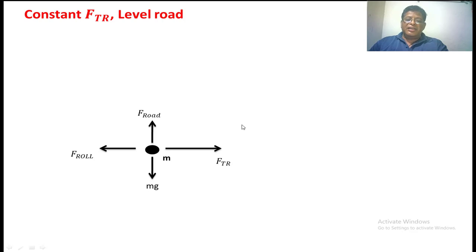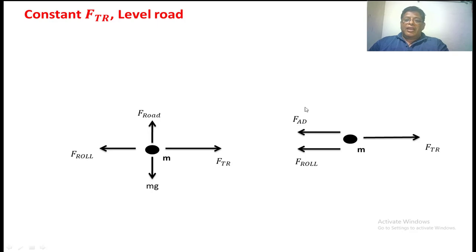In the initial condition, the gravitational force and road force acting on the vehicle both get captured. The constant tractive force is developed by the propulsion unit on the vehicle. There is also the rolling friction force. There is no air drag force because at the time of starting, the vehicle has no speed. When the vehicle is moving, the air drag force will act in the opposing direction and rolling friction will also act in that direction. Because this is a plane road, these two forces act against the tractive force developed by the propulsion unit.